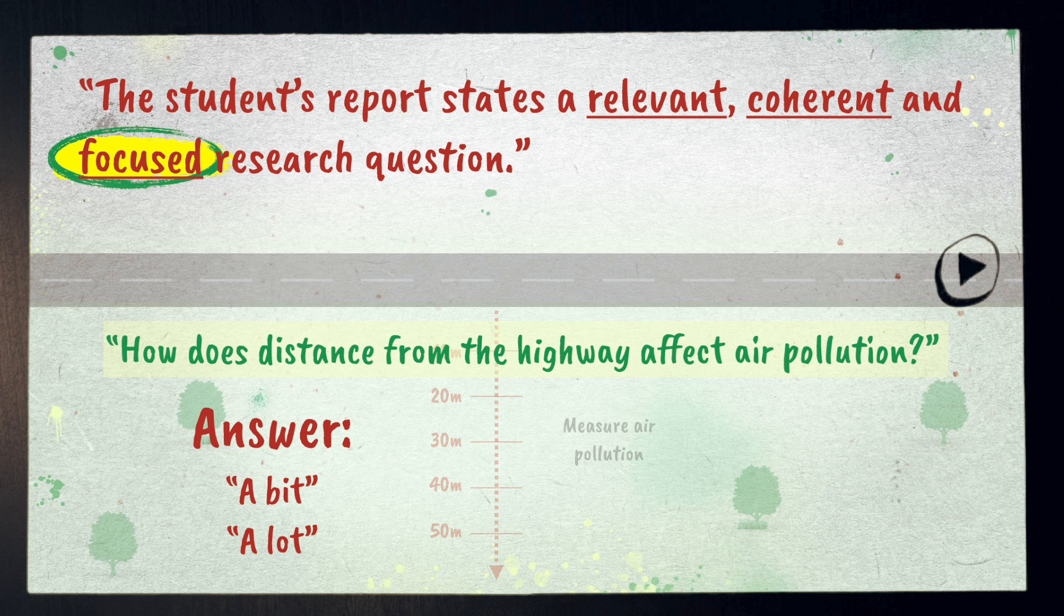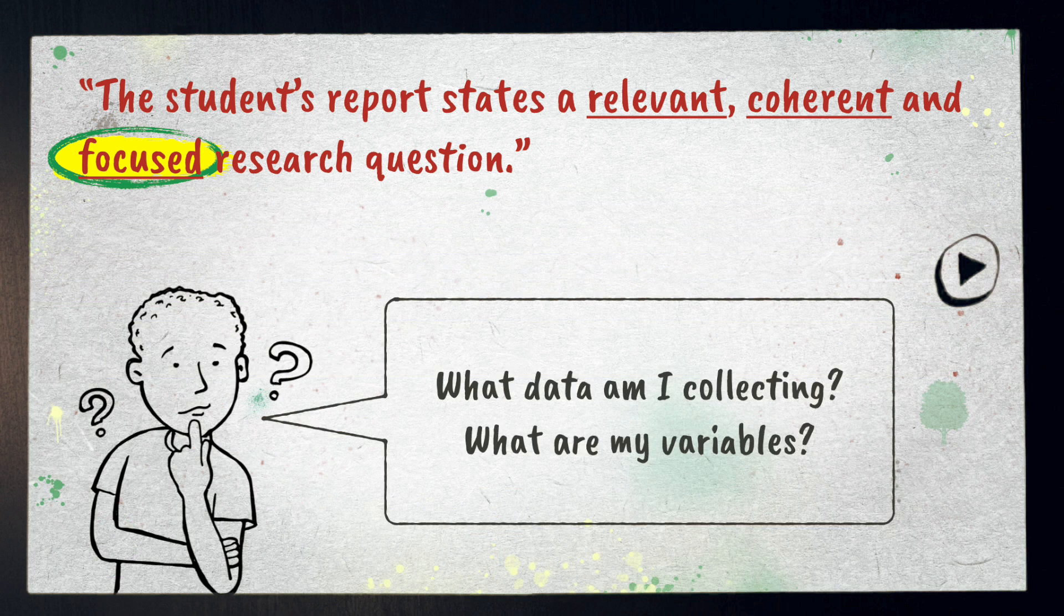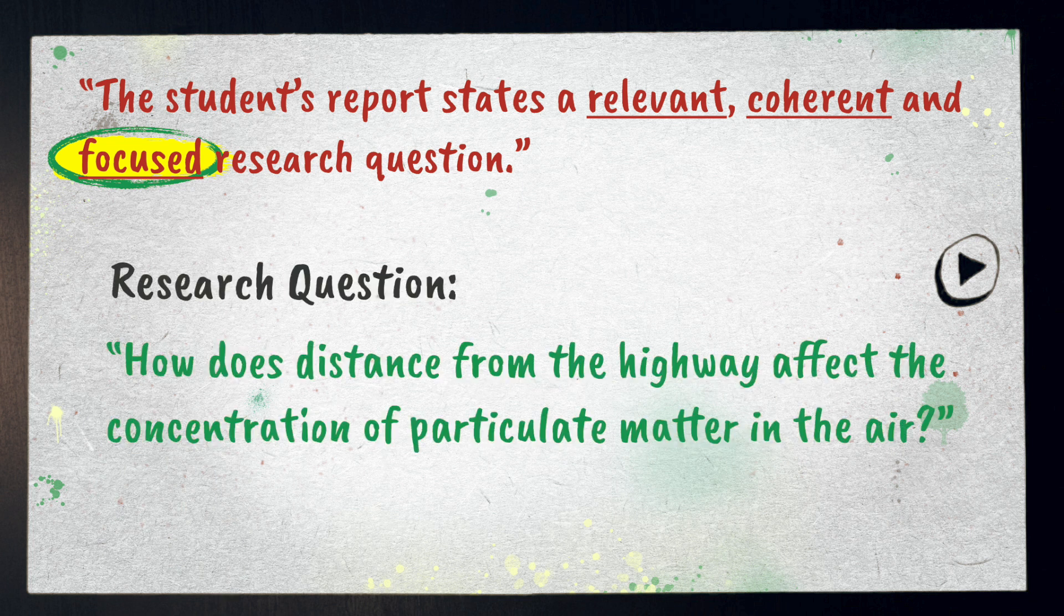It should be more clear from the question what the answer will look like. Just ask yourself, what data am I collecting? What are my variables? So, here's an improvement. How does distance from the highway affect the concentration of particulate matter in the air?